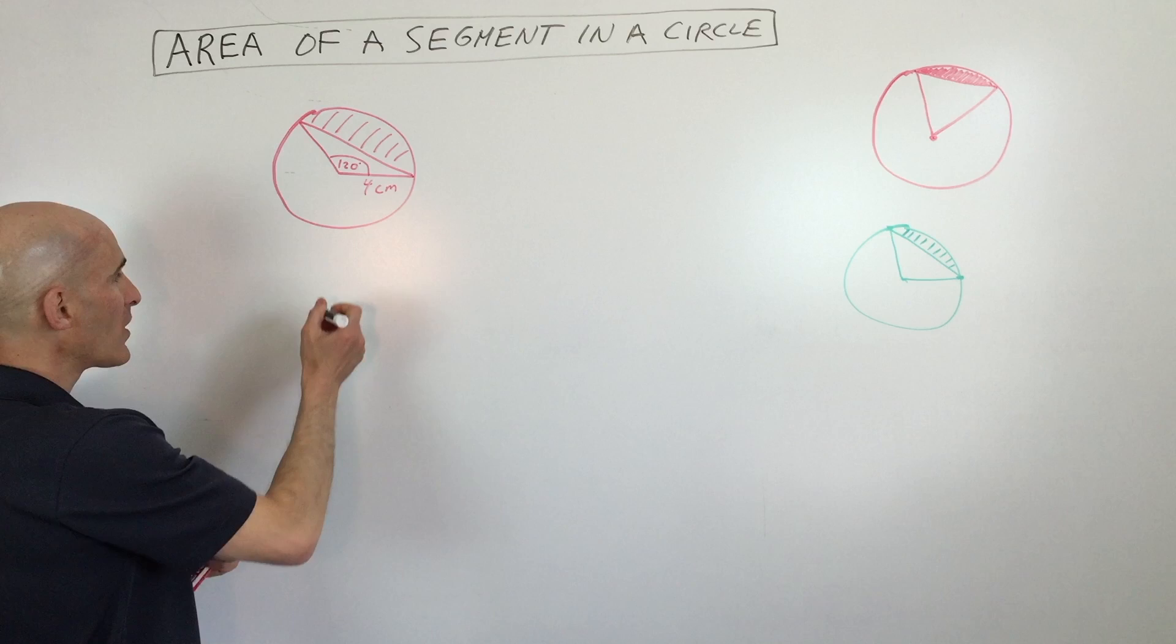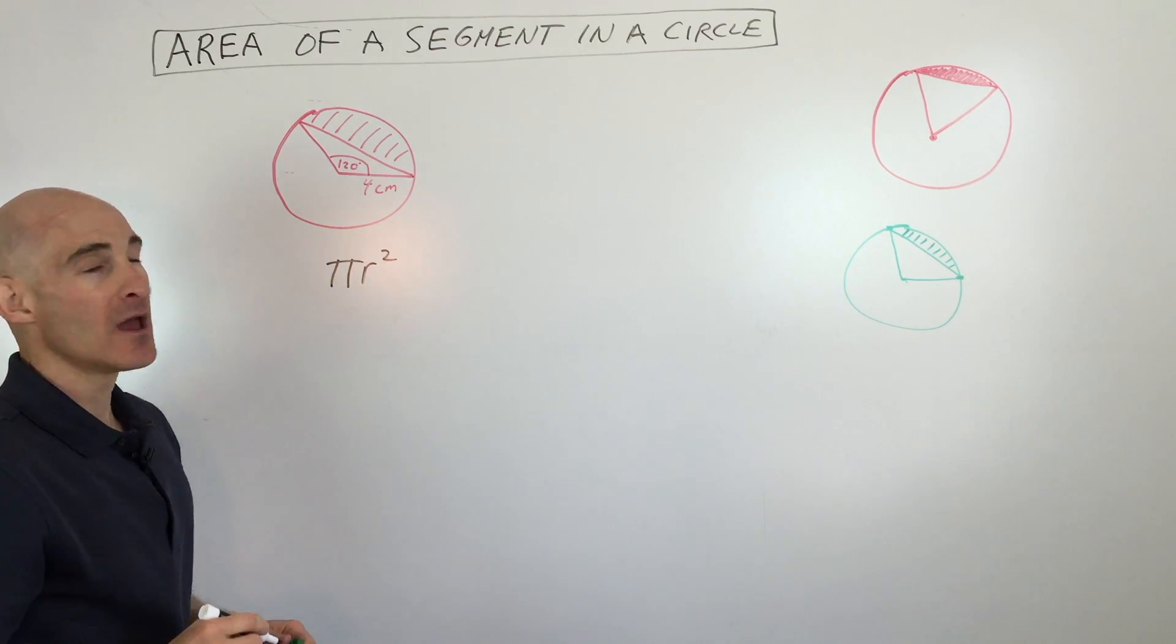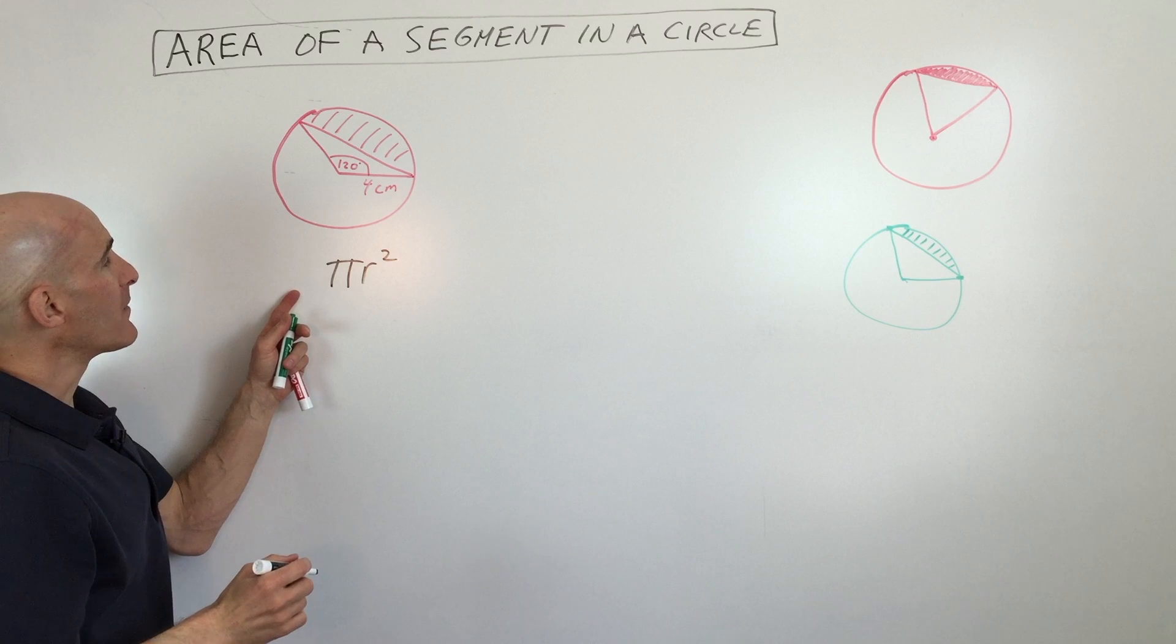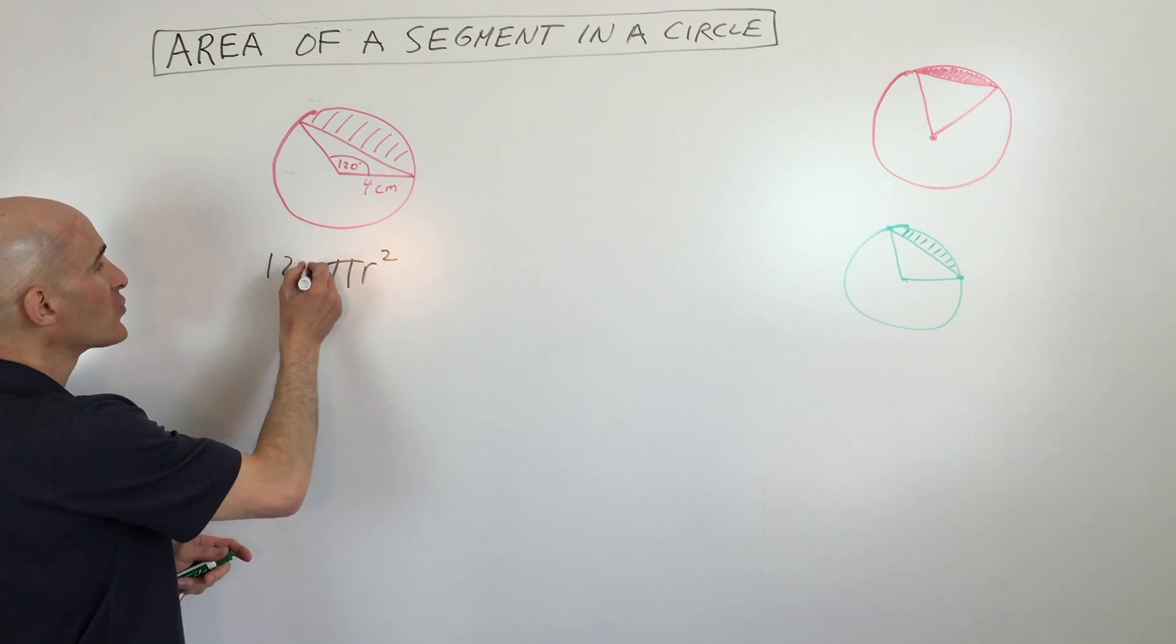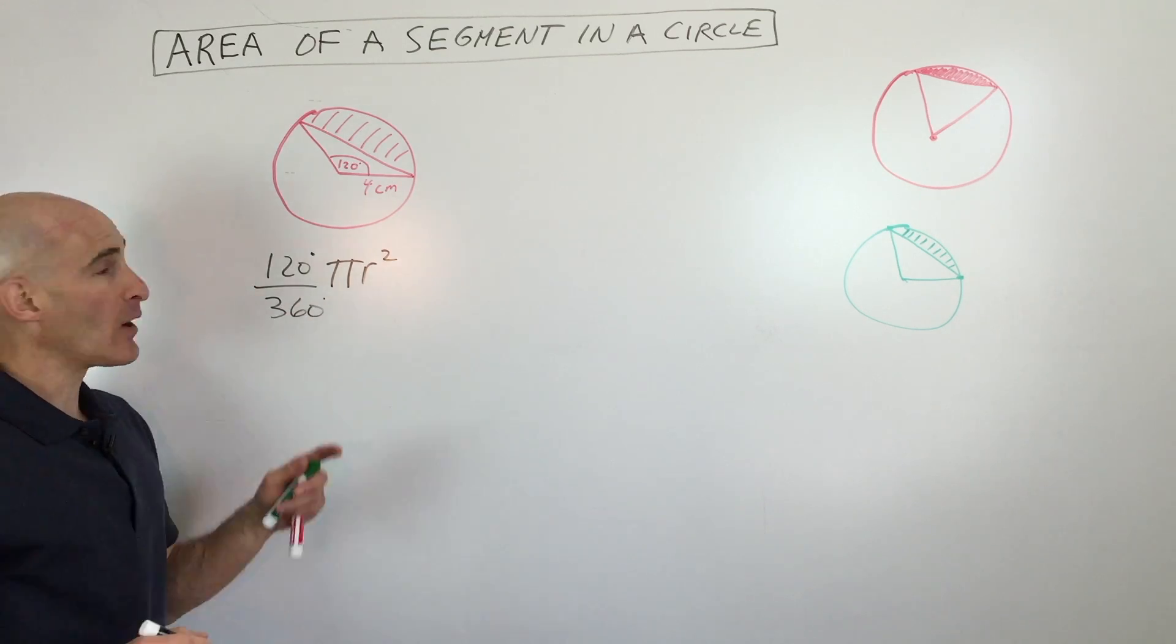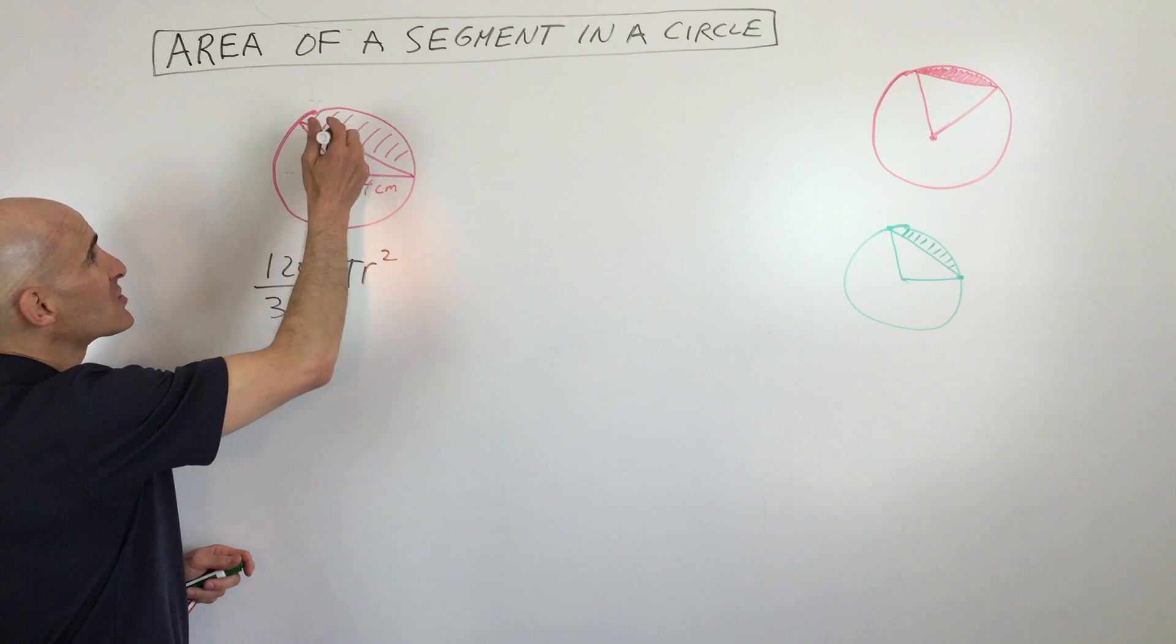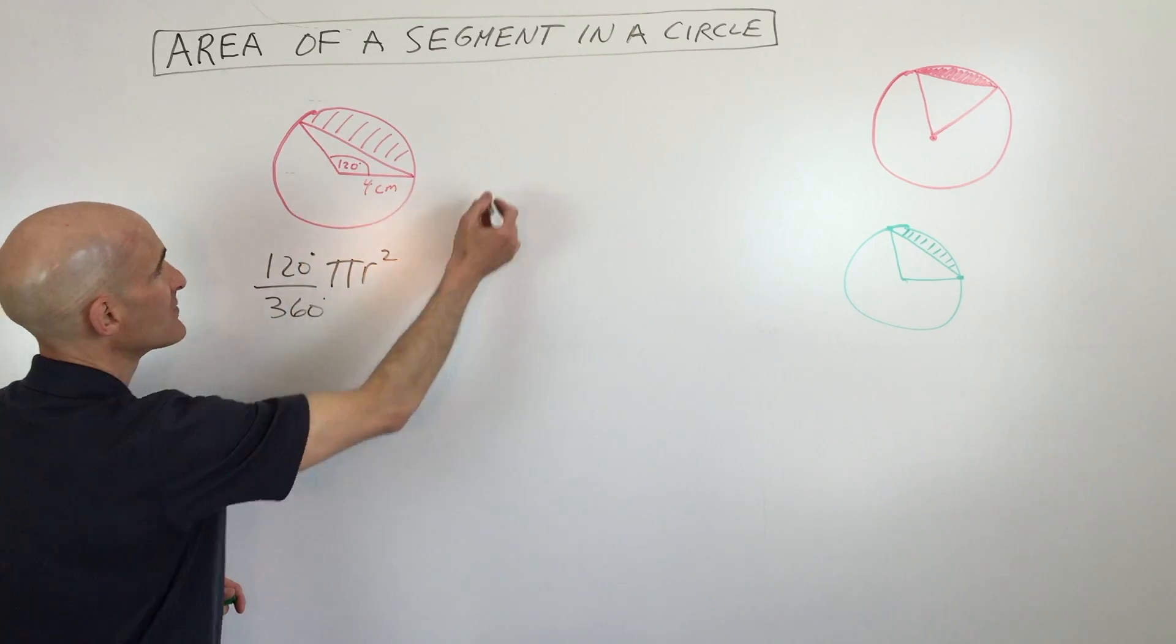What we're going to do is look at the equation of a circle, pi r squared. We're going to multiply by 120 degrees divided by 360. Now why 120 degrees divided by 360?